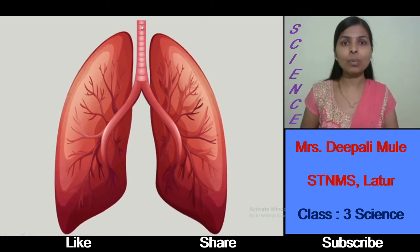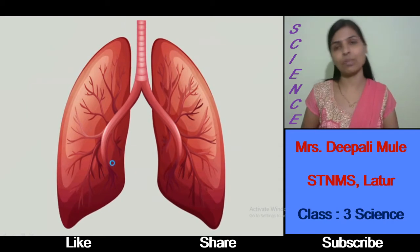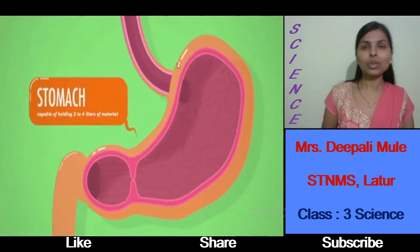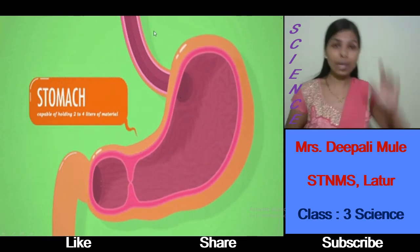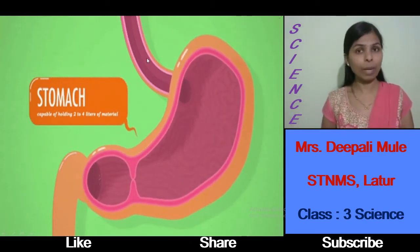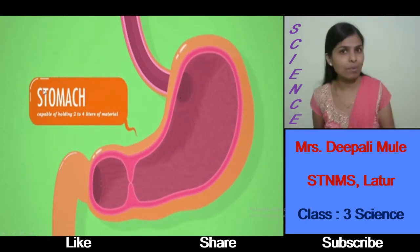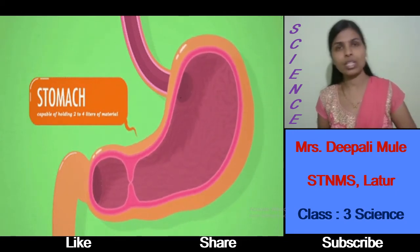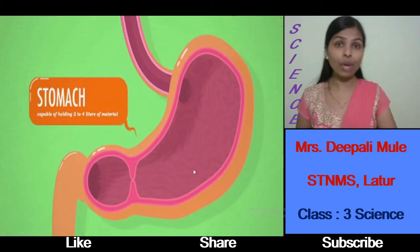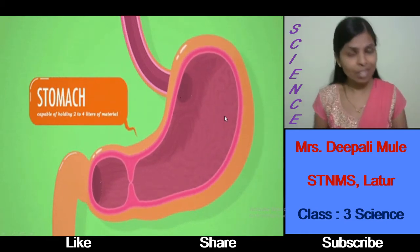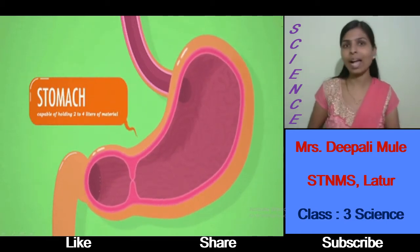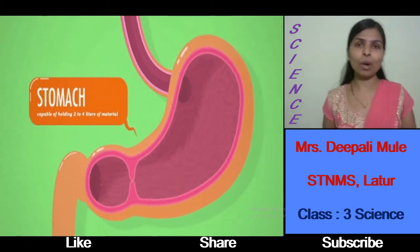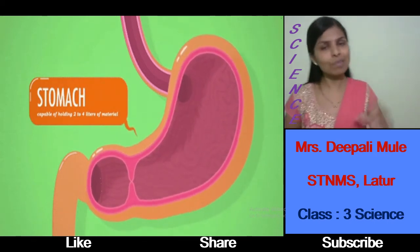The next organ is the stomach. You can see in this picture that the tube above is called the food pipe. When we eat different types of food, that food goes into the food pipe towards the stomach. The stomach is a sac-like muscle structure, and it digests the food properly by breaking down the food into smaller particles.